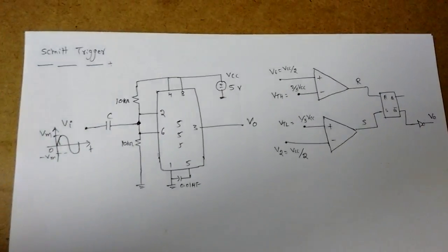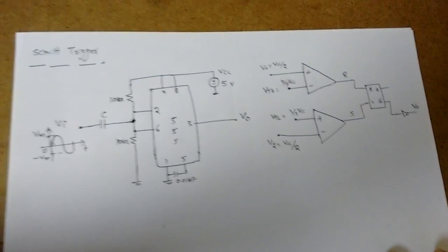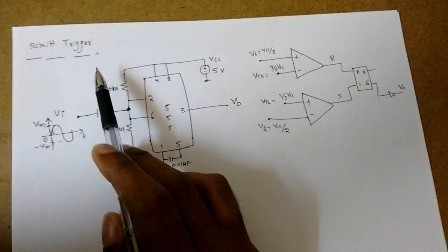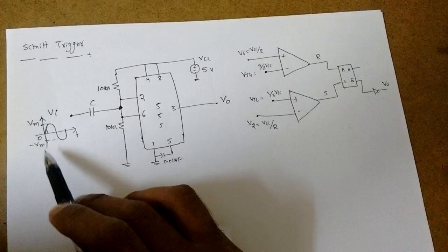I am going to tell you about Schmitt Trigger operation using 555 timer, how it will act as a Schmitt Trigger. Schmitt Trigger is nothing but a circuit which will generate a square waveform if input signal is given as sinusoidal signal.